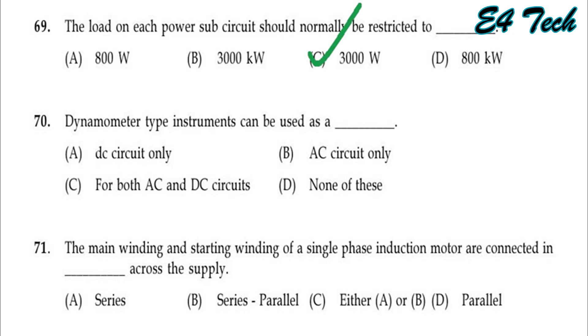Dynamometer type instruments can be used for AC only, DC only, both AC and DC, or none of these. Dynamometer type instruments can be used for both AC and DC.